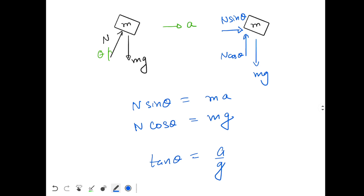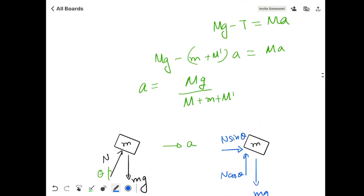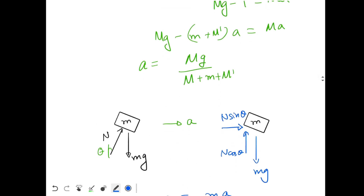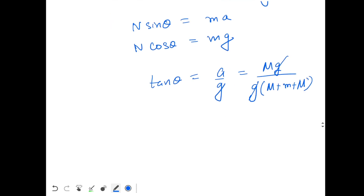So that's it. Now just put the value of a over here. So a is capital M times g divided by (m plus m plus M-dash), which equals capital Mg divided by (m plus m plus M-dash). Then g will cancel out.